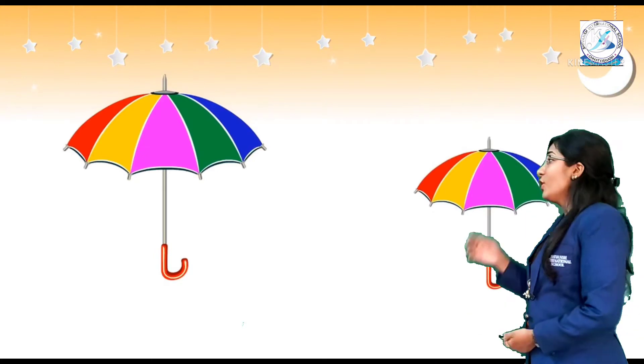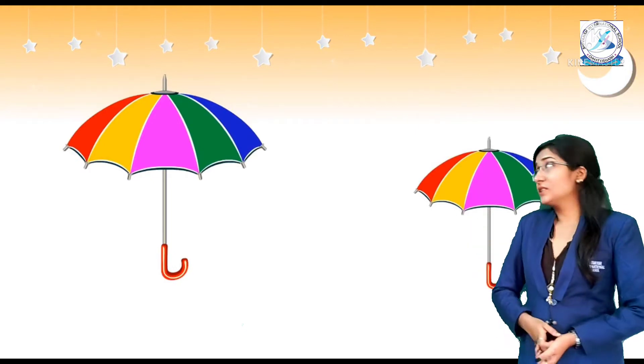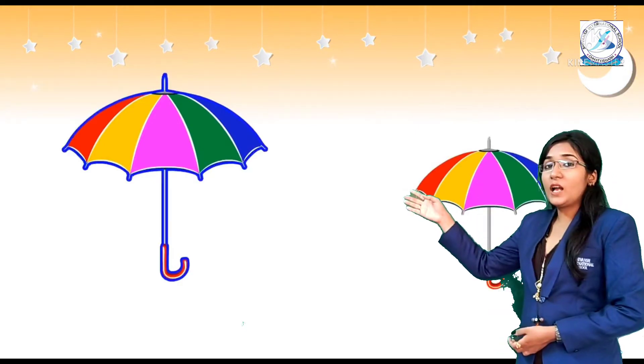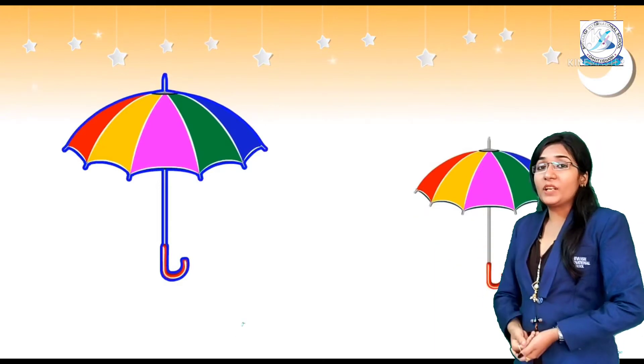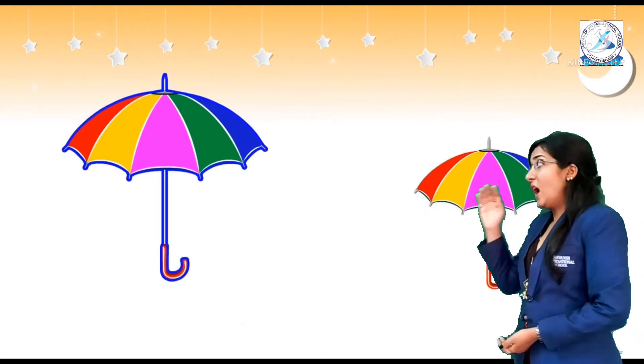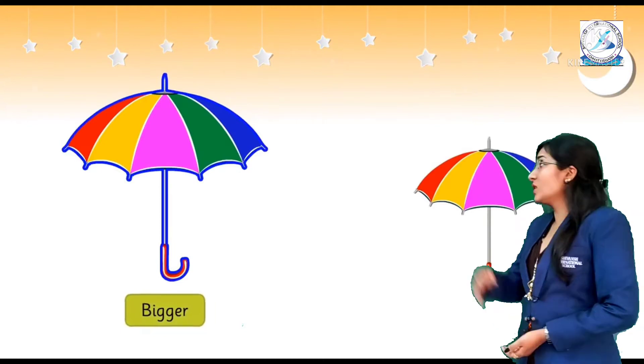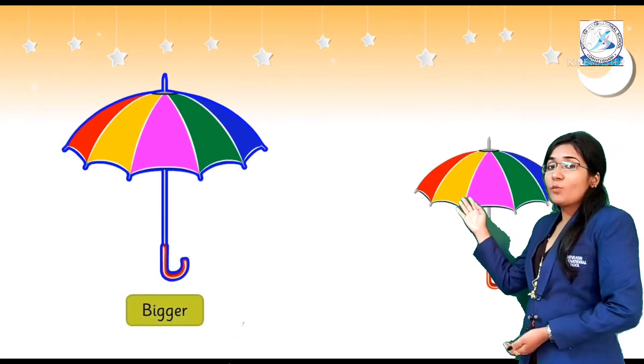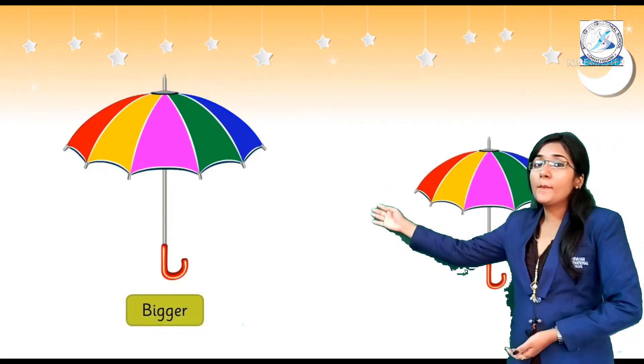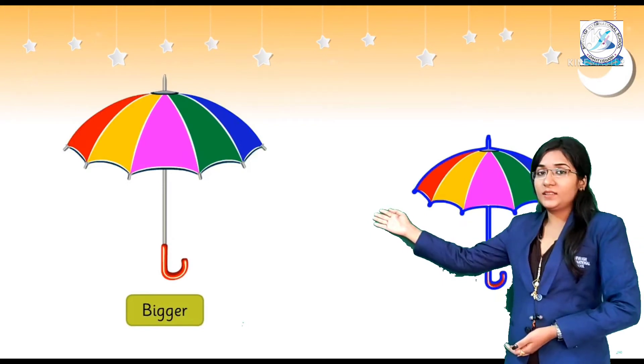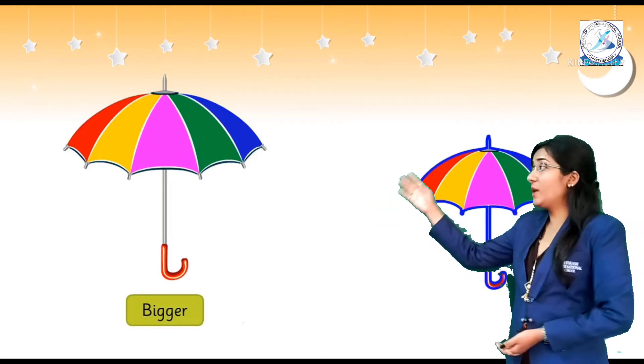Let's see. If you have two objects, see what is the object here — the umbrella. The first umbrella is bigger than the other one, or you can also say this umbrella is smaller than the bigger one. You can see the objects here in the umbrella.